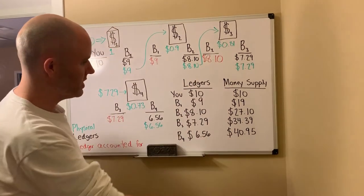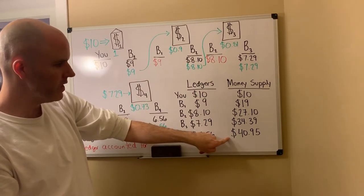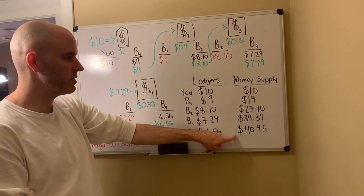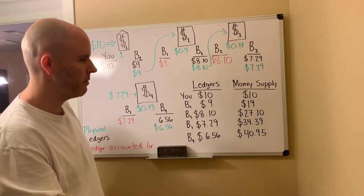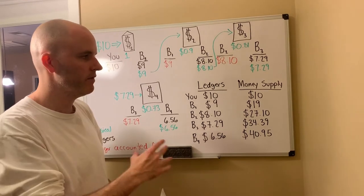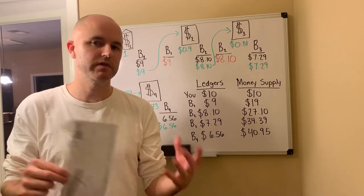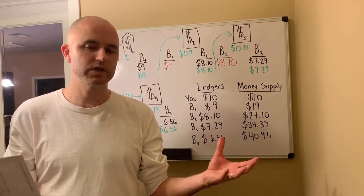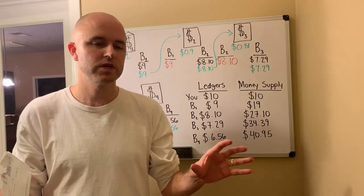Through the transactions we've had here, we started at $10 for our money supply and ended at $40.95. Our money supply has quadrupled over this span. If we continue on this journey, I believe the final tally is somewhere around a ninefold increase in the money supply. In the final video coming up next, we're actually going to take a real-world example — the Federal Reserve system — and look at their ledger prior to quantitative easing and after, to surmise how much credit has been created out of thin air and thrust into the system.